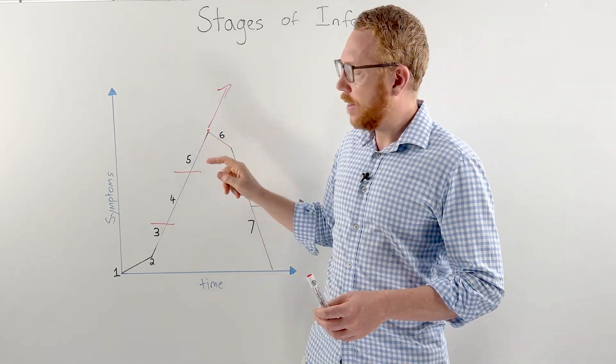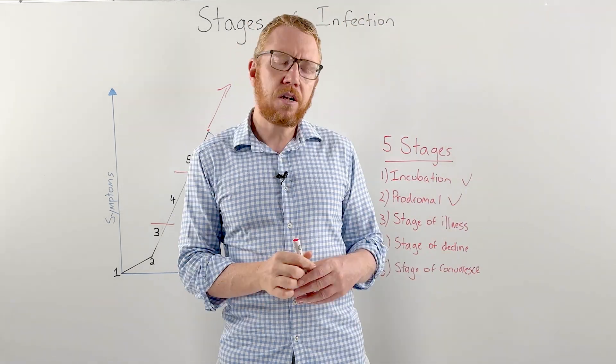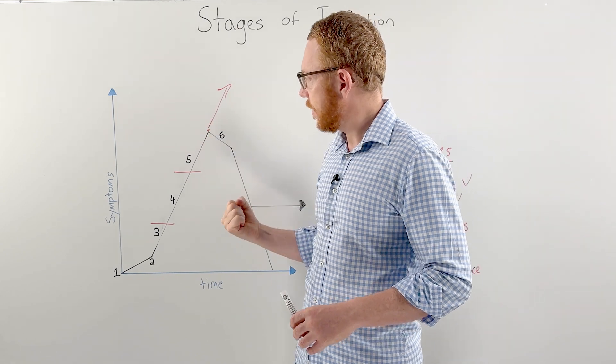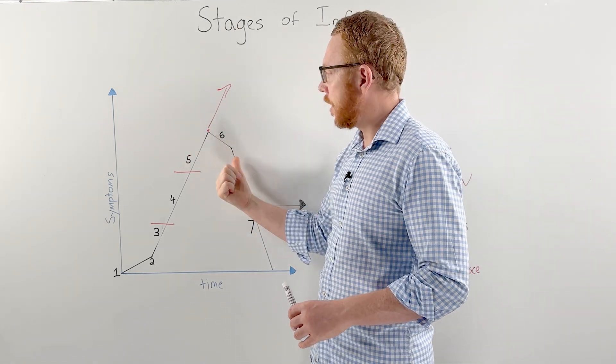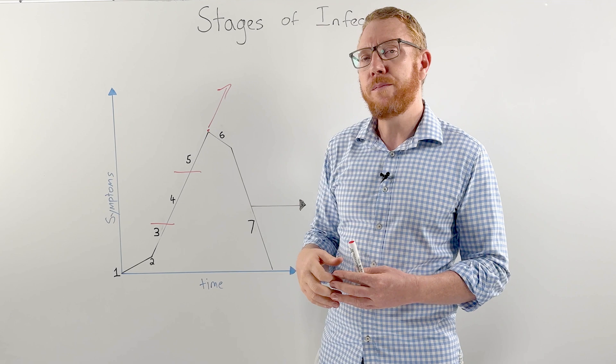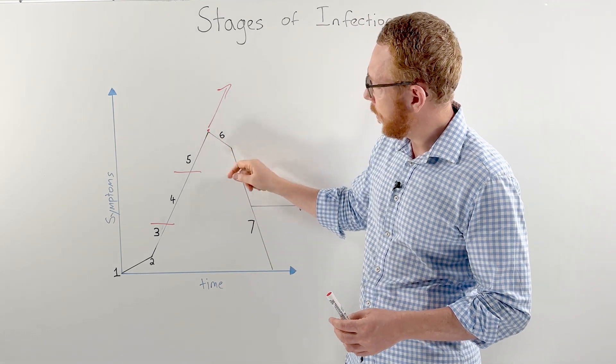Moving to step six, this is going to be the stage of decline. This is where your immune system kicks in. The decline is the decline in symptoms. The decline also is the number of microorganisms. So we start to see it dropping off.